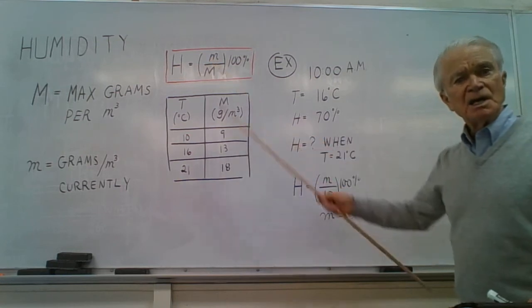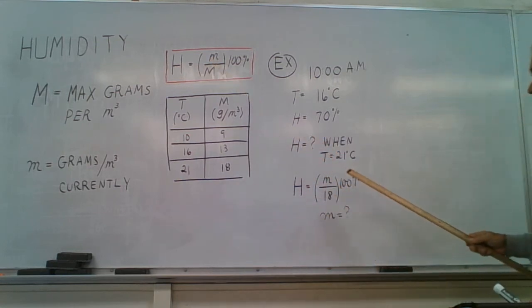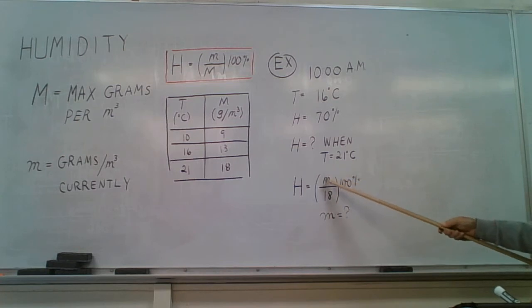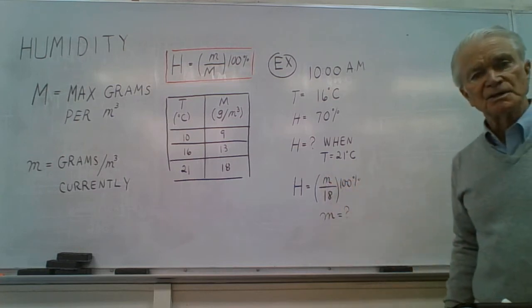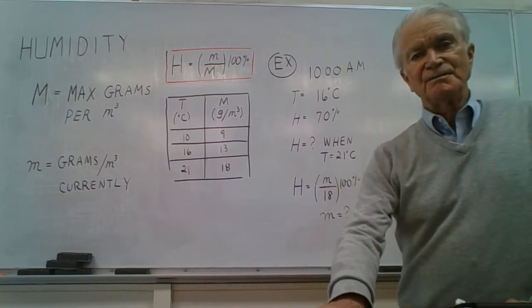an unknown M up there, and then once we find M we'll multiply this ratio by 100 and have our answer. The question is what is M?